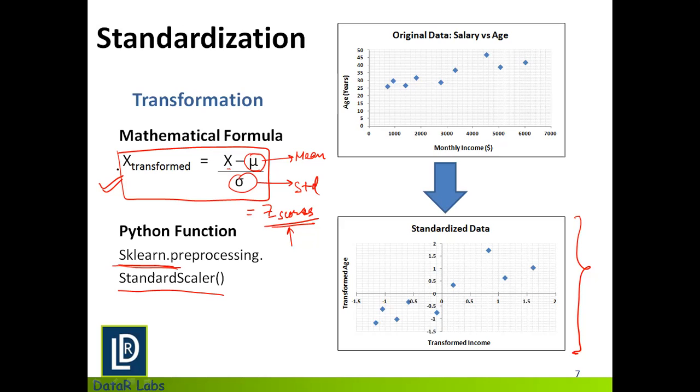So whenever I want to make sure that my model has some information about the outliers, I mostly use standardization. All right, so that's more on this topic of data transformation using normalization and standardization.